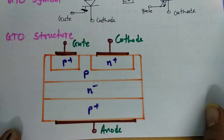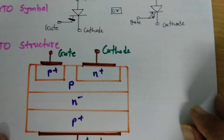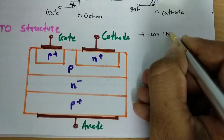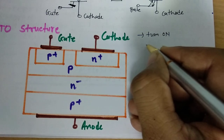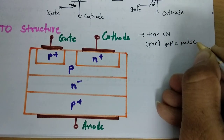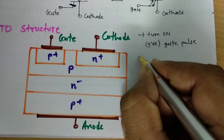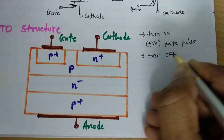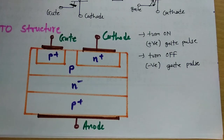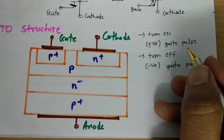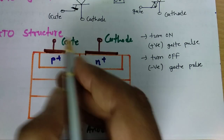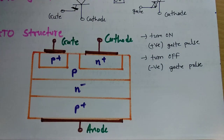Now let us understand how GTO functions. There are basically two things to focus on: the turning on process and the turning off process. The turn-on mechanism of GTO is similar to SCR — a positive gate pulse will turn it on. To turn it off, a negative gate pulse is needed. These gate pulses are given with respect to cathode. So a positive gate pulse with respect to cathode turns GTO on, and a negative gate pulse with respect to cathode turns it off.